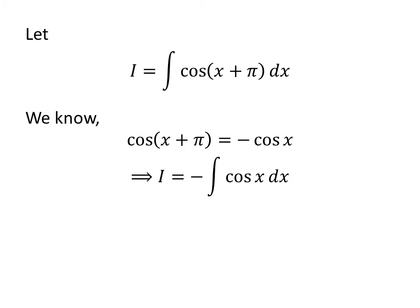So application of the above identity gives us I is equal to minus the integral of cosine of x with respect to x.